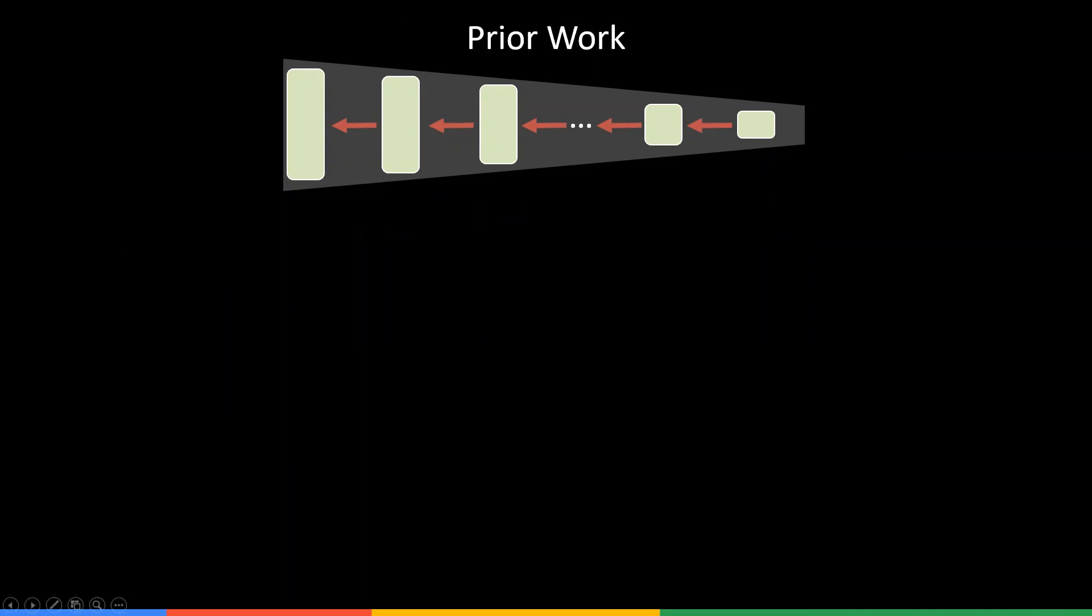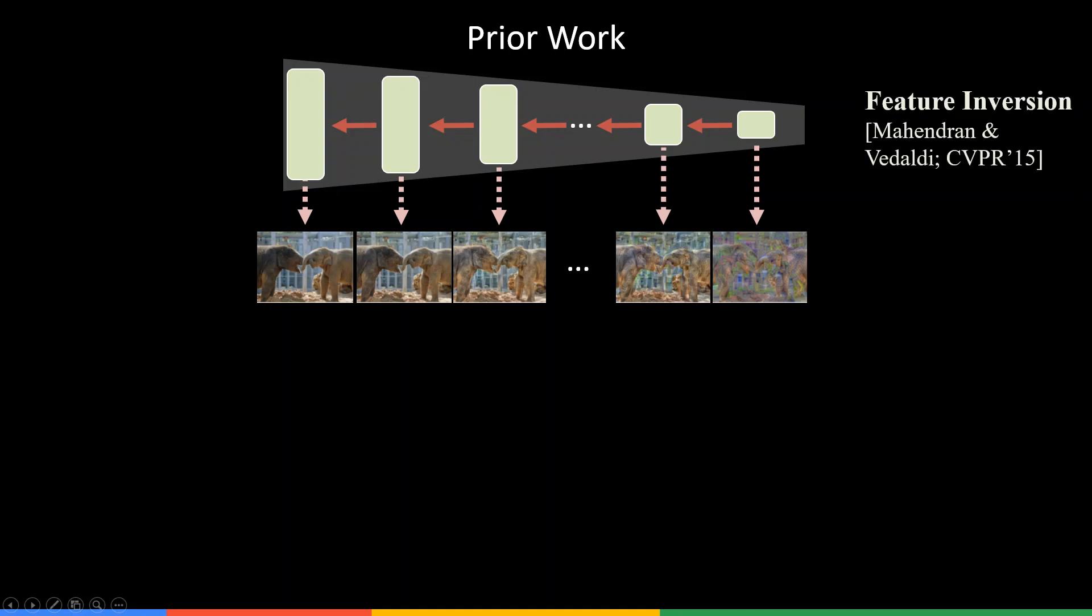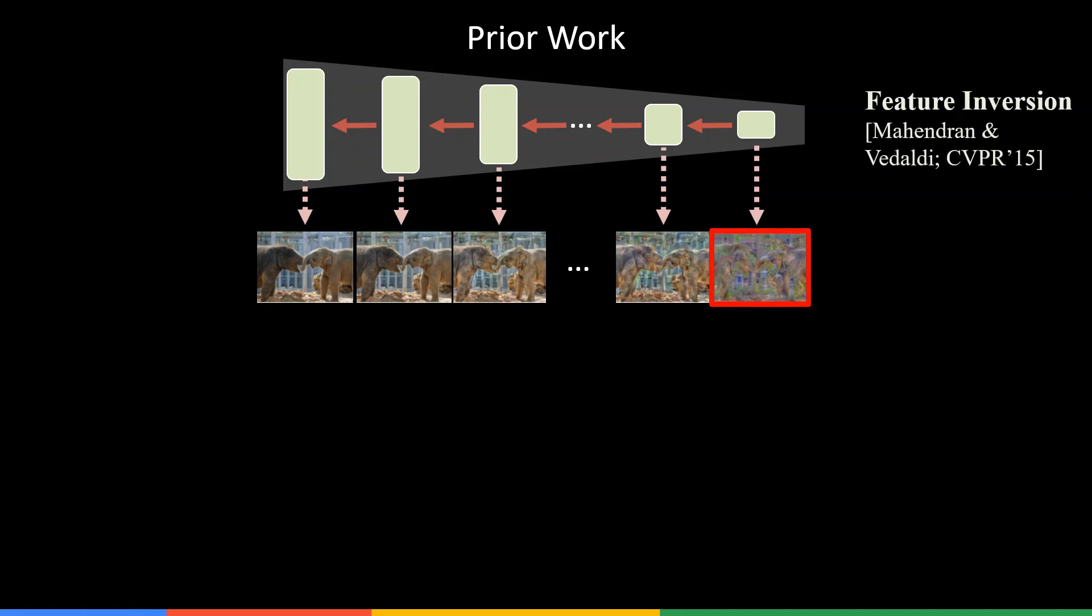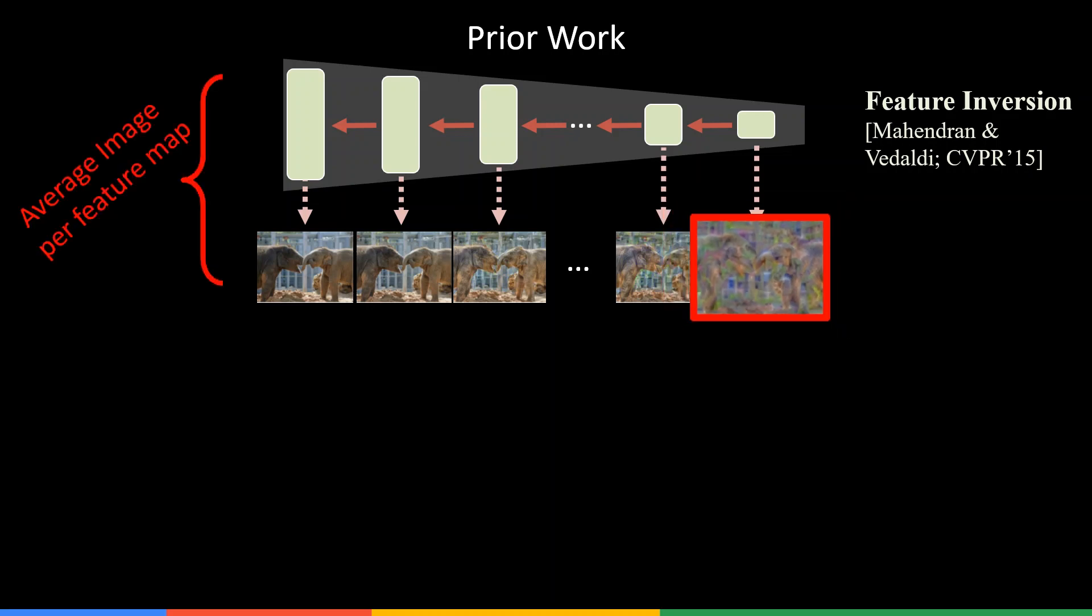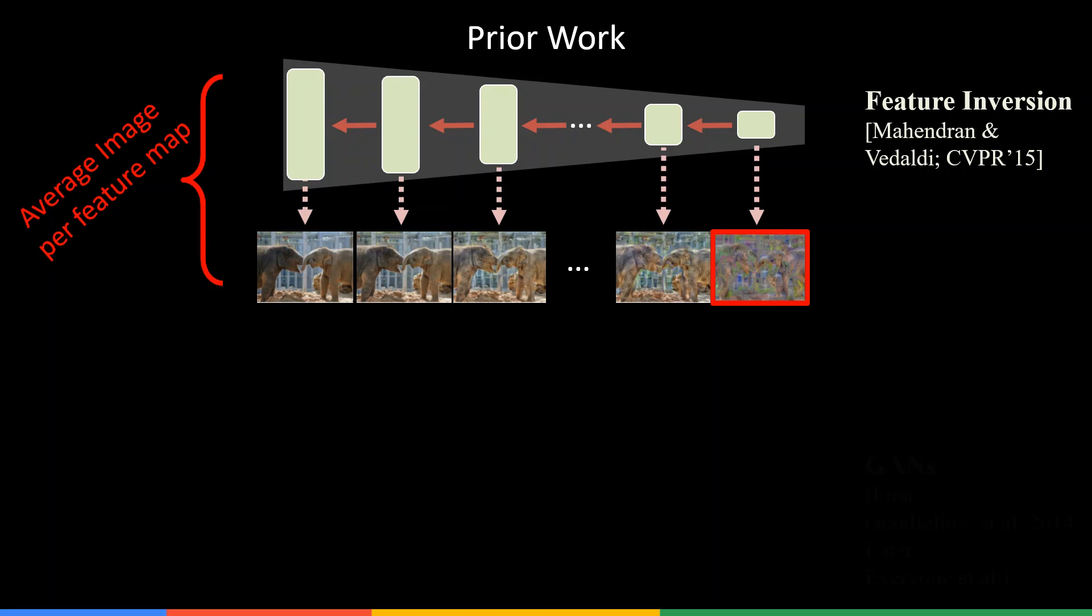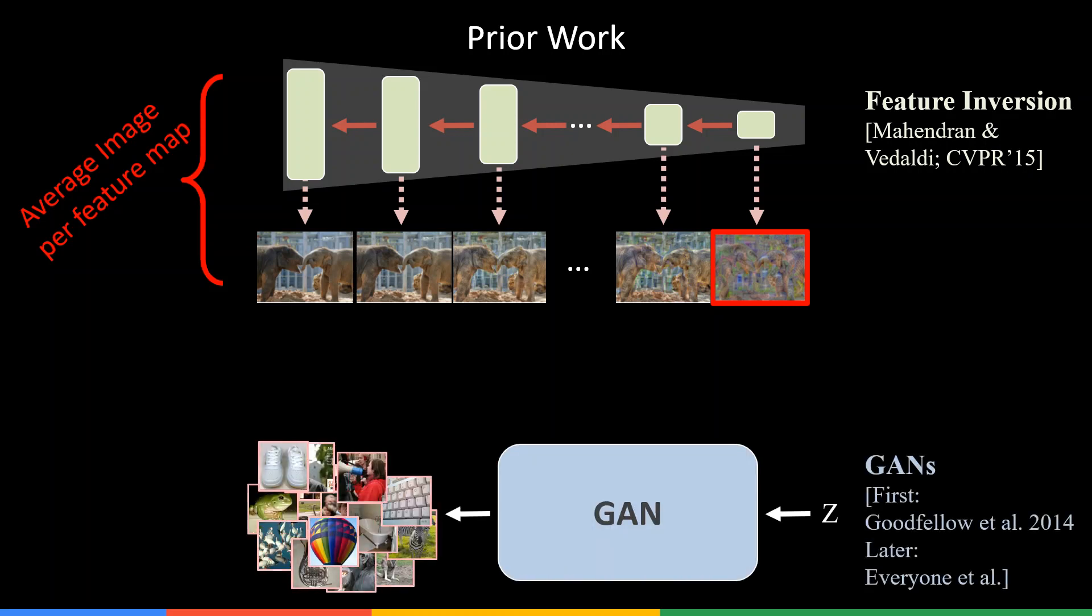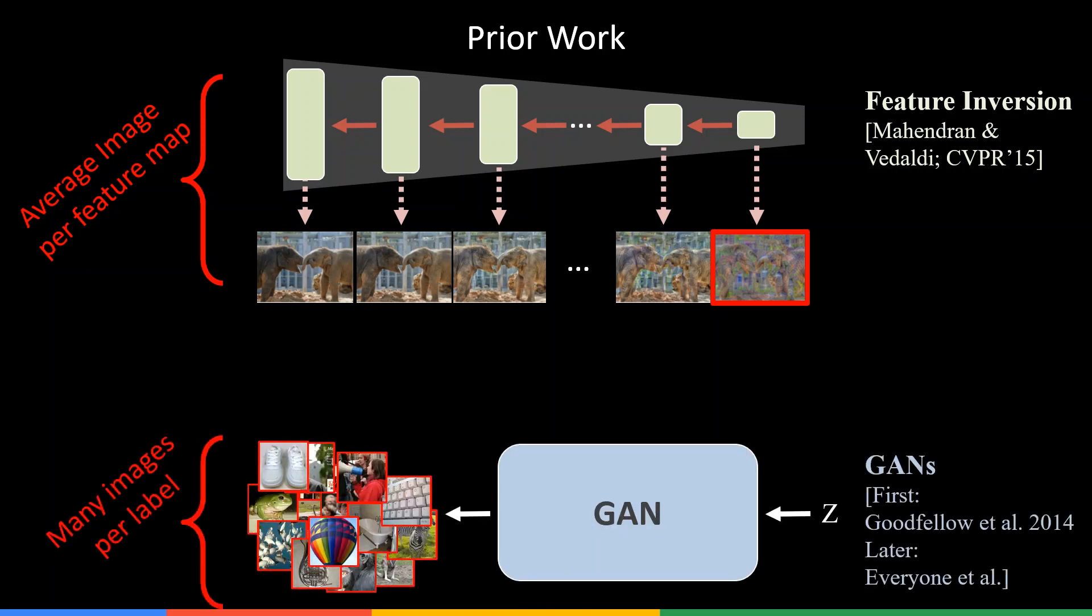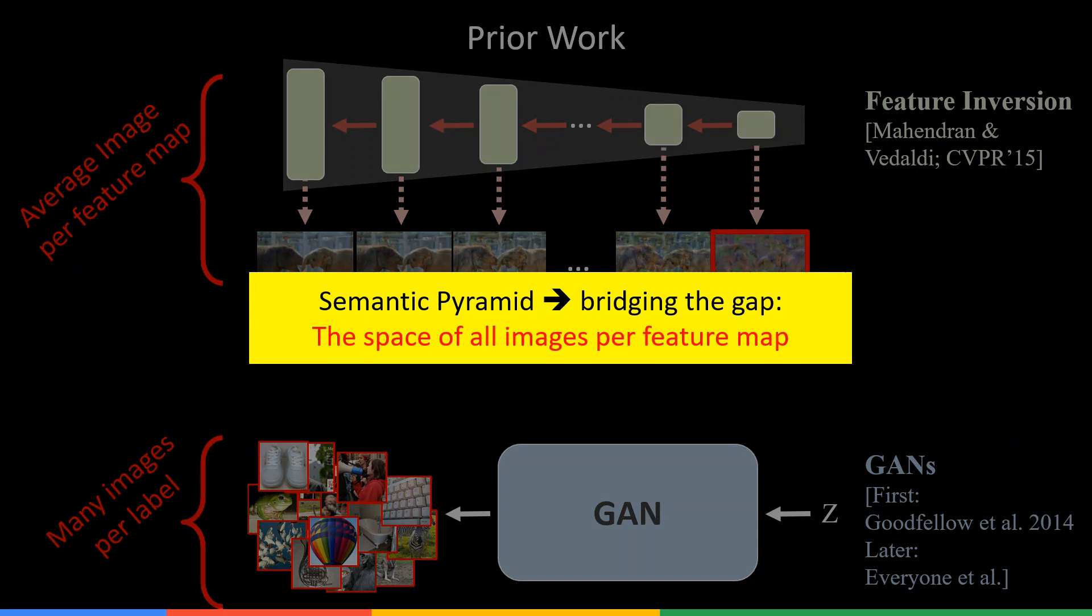Previous approaches mainly used feature inversion by backprop optimization to invert the network. However, being discriminative, these return a single average of the possible solutions. Generative models, on the other hand, generate diverse images given a class label. Semantic pyramid bridges the gap, sampling diversity from the space of all images per a feature map.